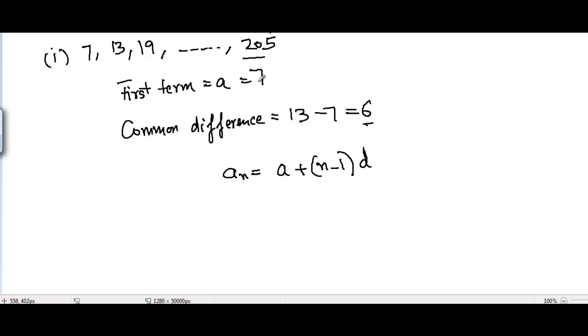Now we have 205 here. If we can find its location, we will know how many terms are there in this AP. So I will put 205 because it's given to us that an = 205.